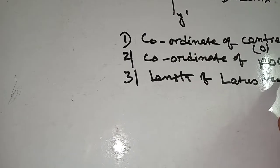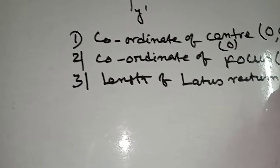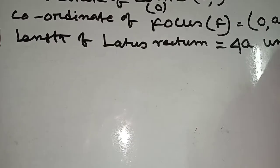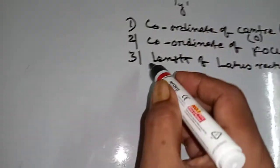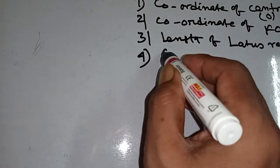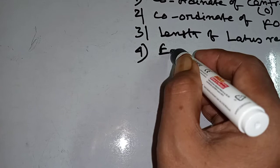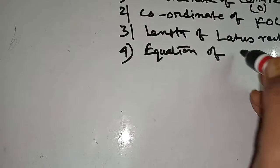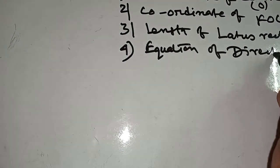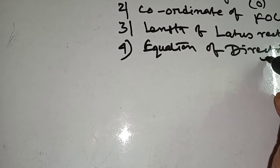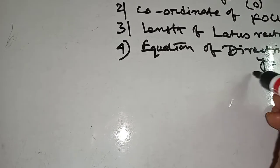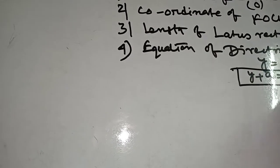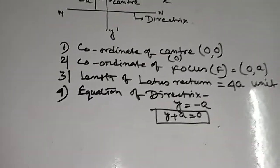Length of latus rectum: 4A. Equation of directrix: y equal to minus A, or y plus A equal to 0.